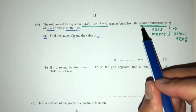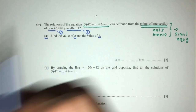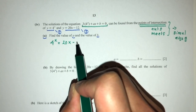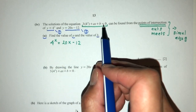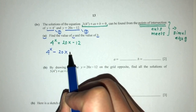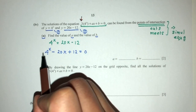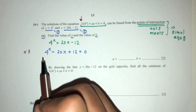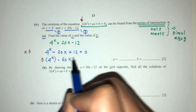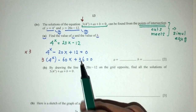Since we are trying to find the point of intersection, we solve these two equations simultaneously. Equation 1 is y = 4^x, equation 2 is y = 20x - 12. Since y is the subject in both, we place them equal: 4^x = 20x - 12. Sending everything to one side: 4^x - 20x + 12 = 0. We're not done yet — observe that here we have a 3, so we multiply everything by 3.